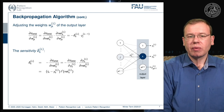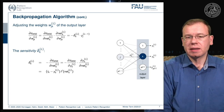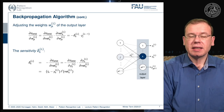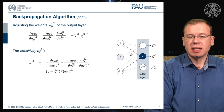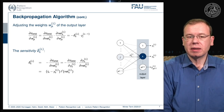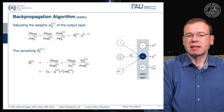Computing the sensitivity in more detail using the chain rule: we take the partial derivative of the error with respect to the last layer output, times the partial derivative of the output with respect to the net. This gives us the target value minus the last layer output, multiplied by f prime — the derivative of the activation function evaluated at the net of layer l. This gives us the sensitivity in the last layer.